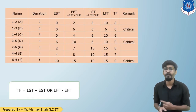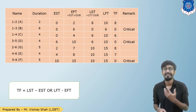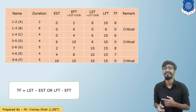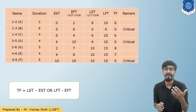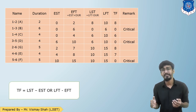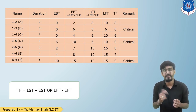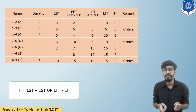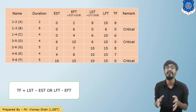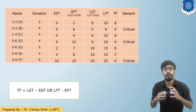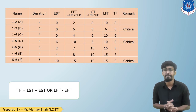Here is the table of floats showing columns for EST, EFT, LST, LFT, and the total float with remarks. EFT is above the arrow at the head; LFT is below the arrow at the end. EFT equals EST plus duration; LST equals LFT minus duration. Total float is either start time subtraction or finish time subtraction. You know all the formulas as we have been doing this since chapter four — that is how we prepare the entire table.